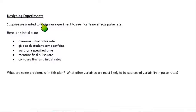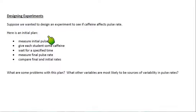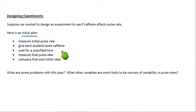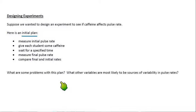Now we're going to design an experiment — the caffeine experiment. Suppose we want to see if caffeine affects pulse rate. Here's an initial plan: measure the initial pulse rate for each person, give each student some caffeine, wait a specified time — maybe 30 minutes — then measure their final pulse rate, and compare the initial and final pulse rates. What would be some problems with this plan? What other variables could be a source of variability or confounding?